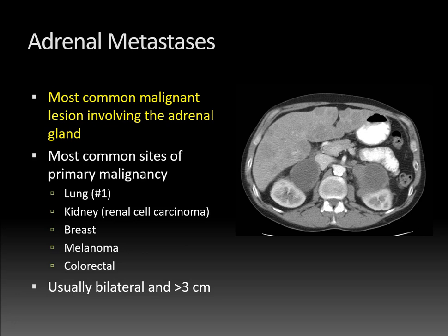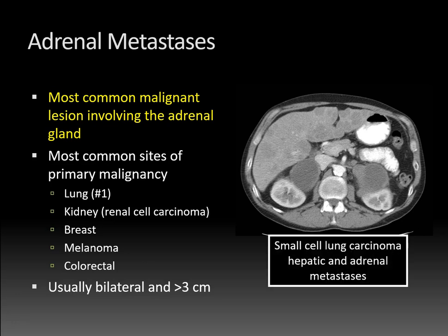Remember that pheochromocytoma can be bilateral 10% of the time, especially if there's a genetic predisposition, and the incidence may be even higher. This patient, though, had small cell lung carcinoma with hepatic and adrenal metastases.